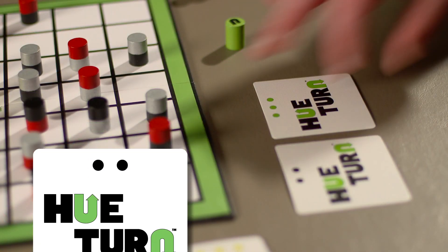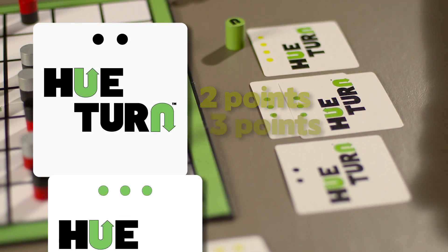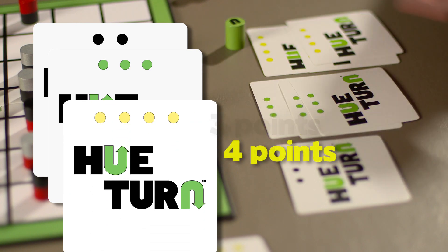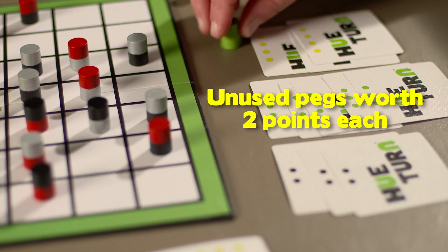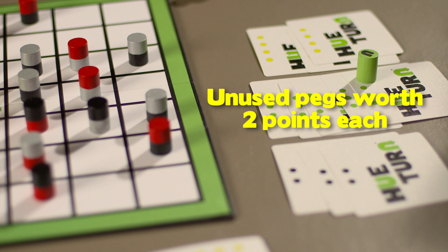Each completed easy pattern is worth two points. Medium patterns are worth three, and hard patterns are worth four. Unused green pegs are also worth two points each. Whoever has the highest total is the winner.